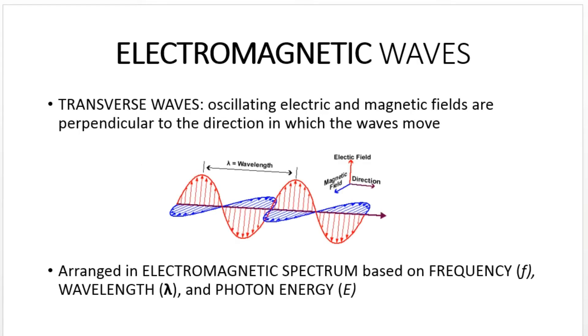Hi and welcome to Dorothy Marie Vlog. Today we will be discussing electromagnetic waves. Electromagnetic waves are considered transverse waves since they have oscillating electric and magnetic fields which are perpendicular to the direction in which the waves move.